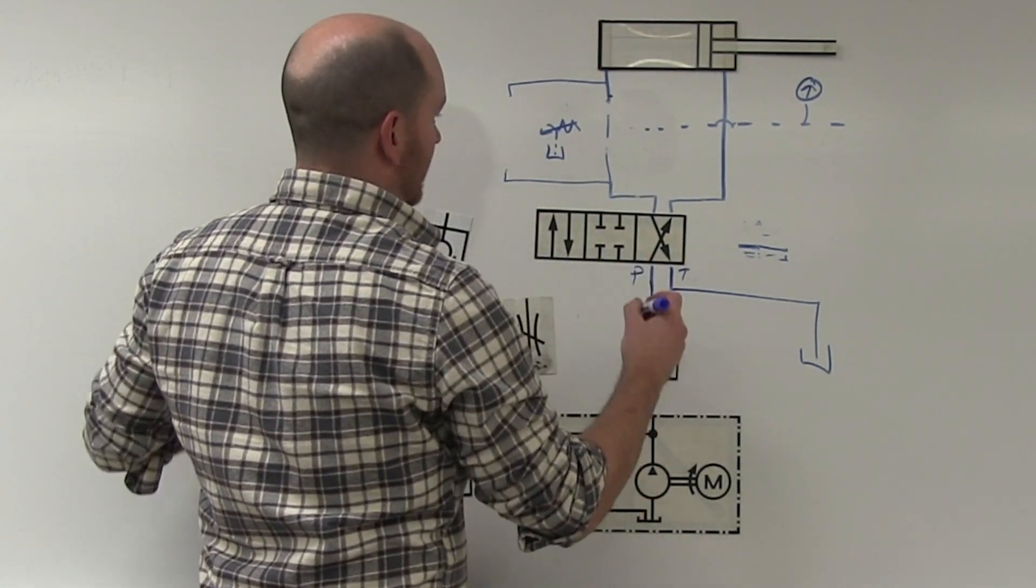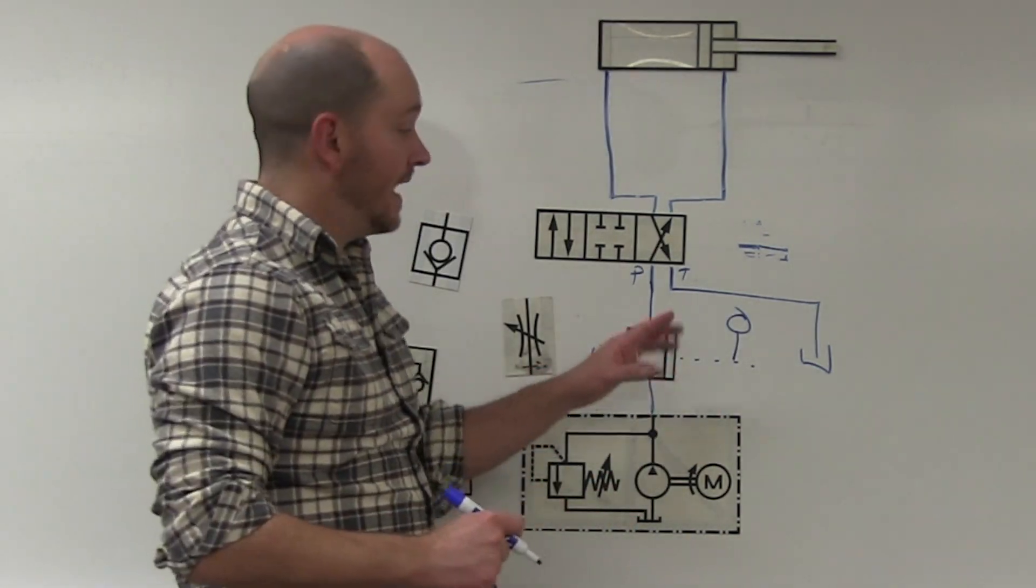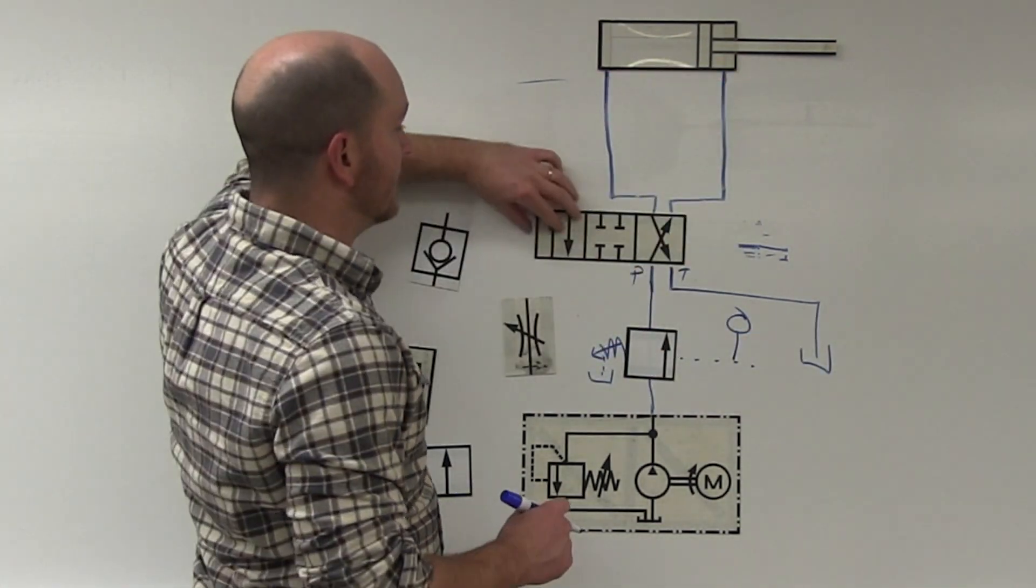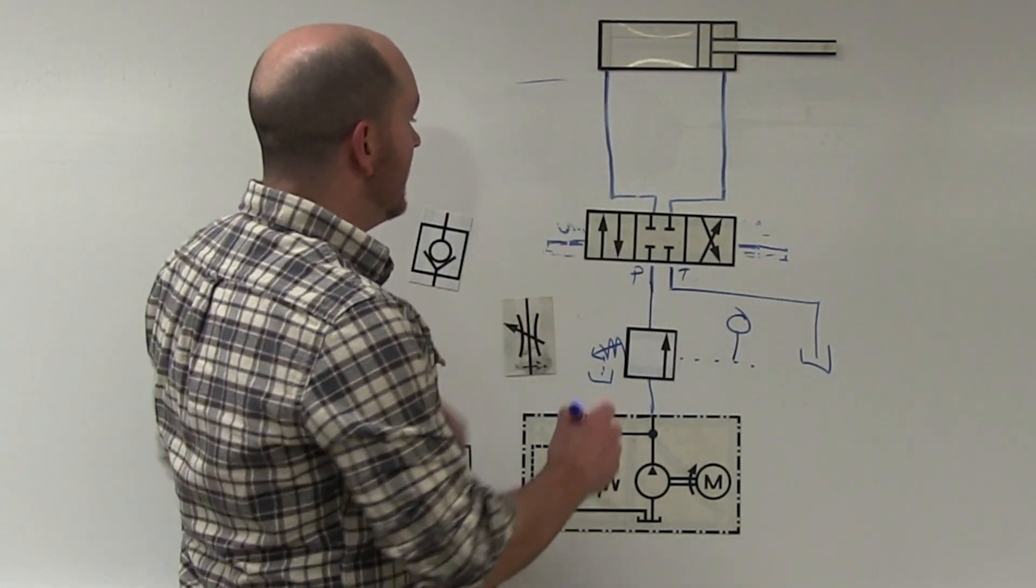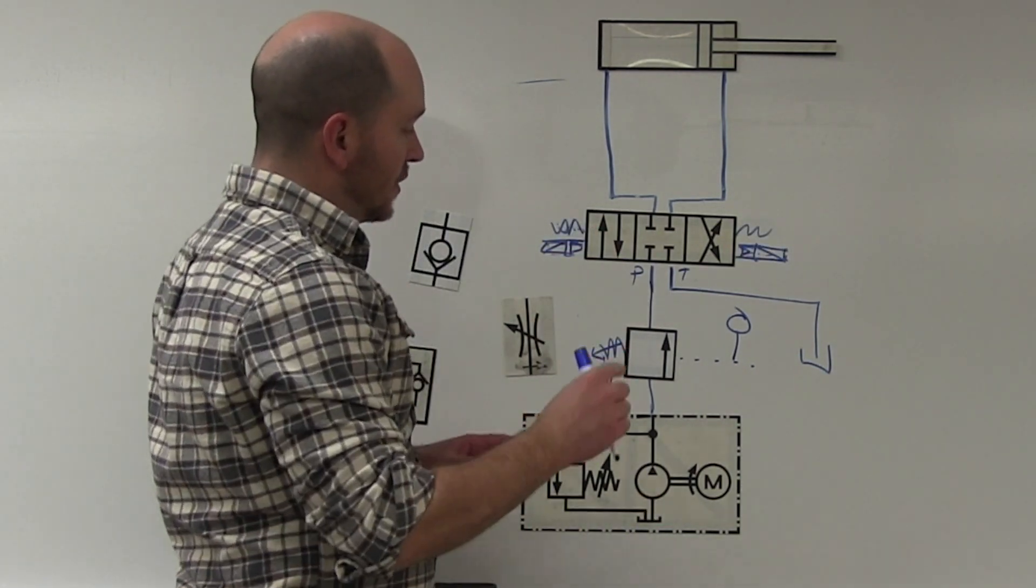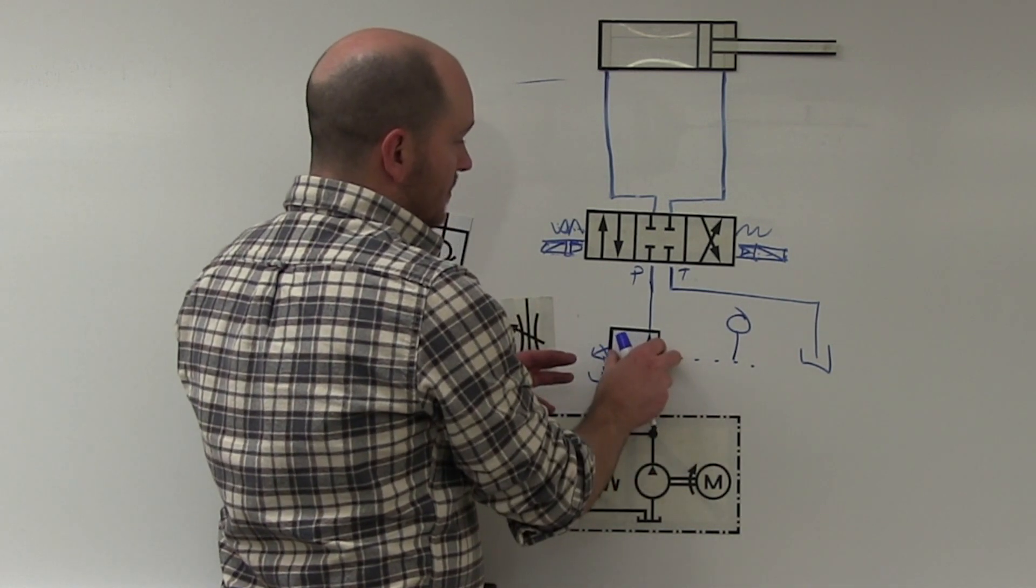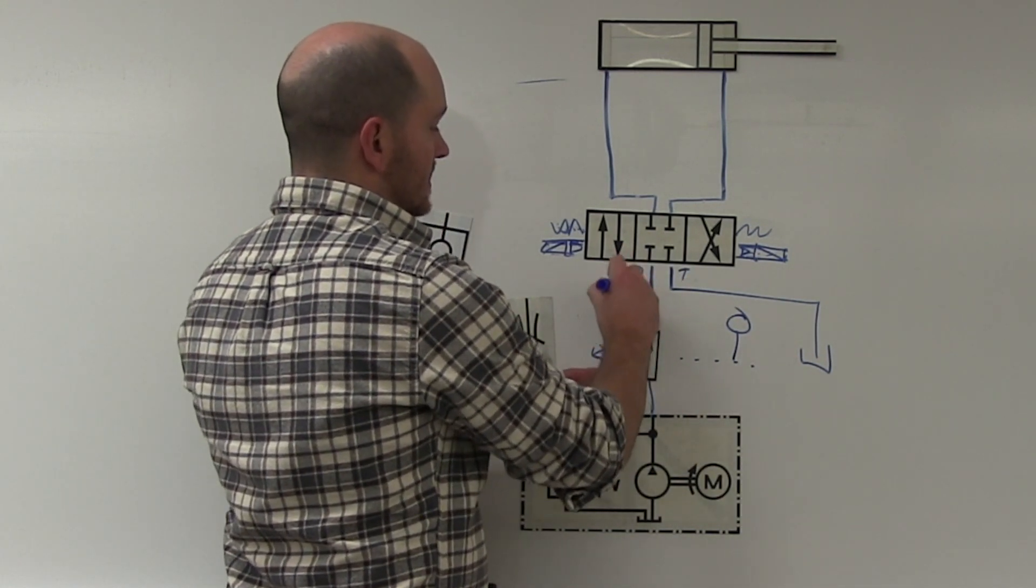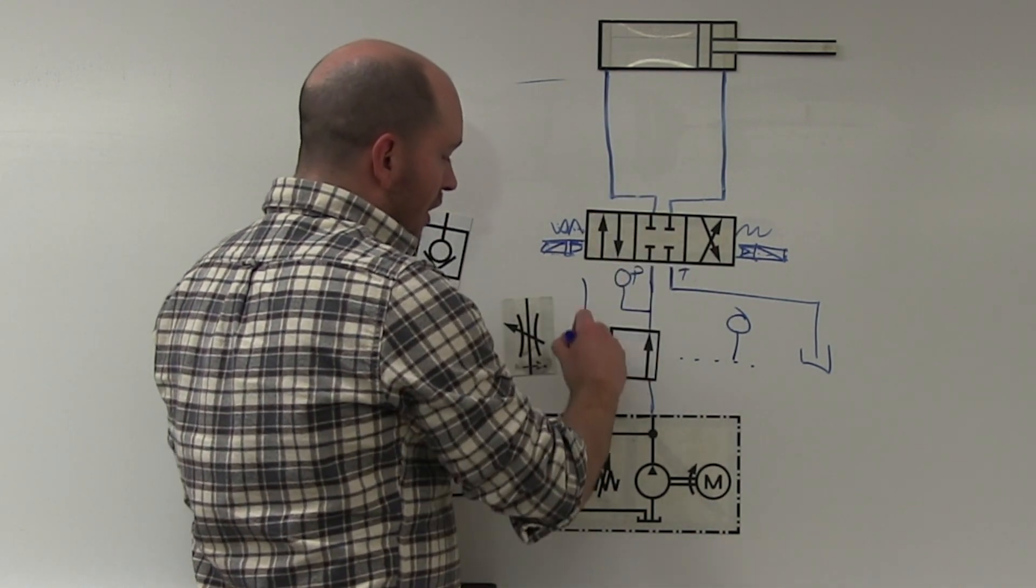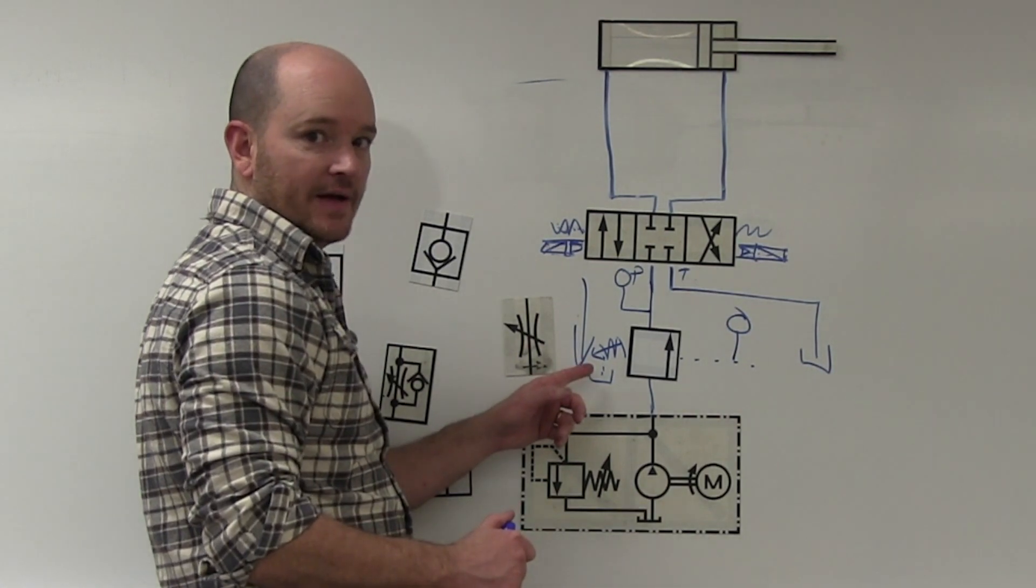But let's say for some reason the system was designed differently. If the sequence valve is down here. Now here, let's say I want to make sure that something on this machine has already happened before this entire device can sequence. This is much different. So now, let's say this gets sequenced over. This moves. Pressure is supplied here. But oil will never go this way. So I don't require a bypass check valve on here.